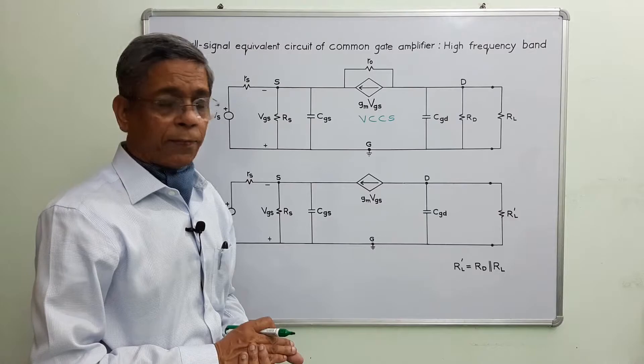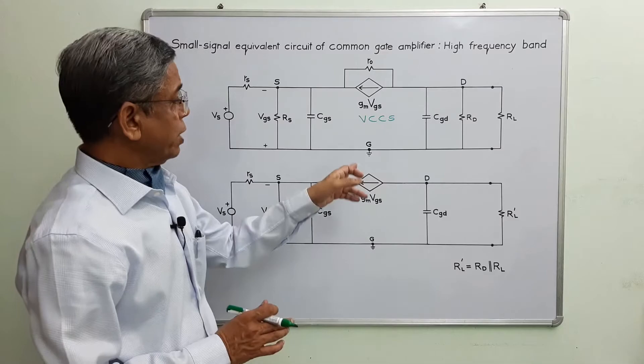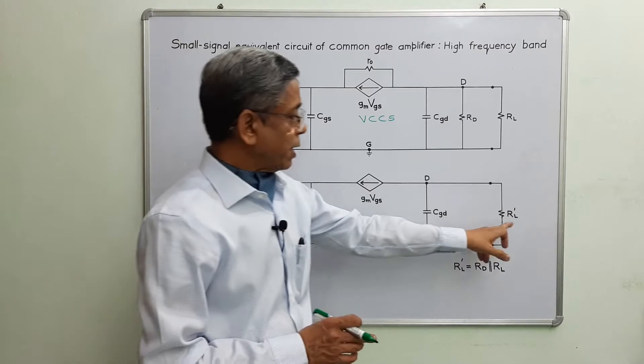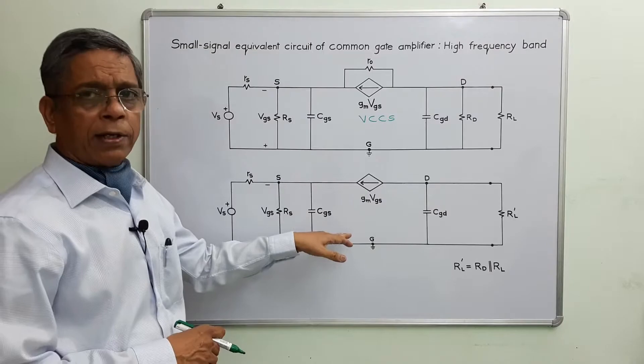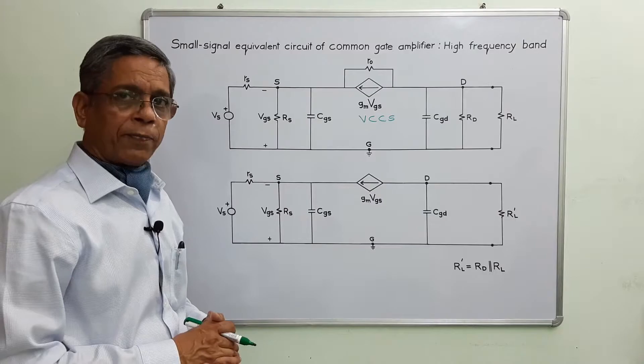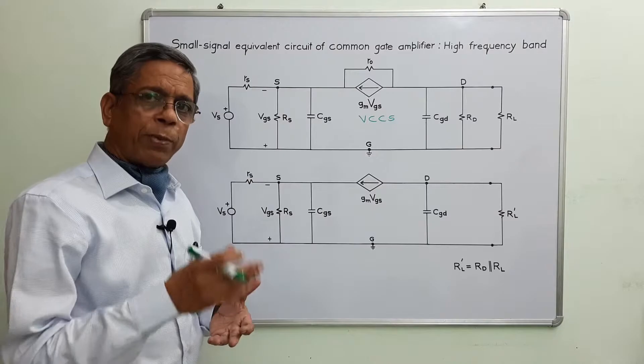Because CGS and CGD don't behave as open circuits at high frequency band, the gain starts falling beyond the upper 3dB frequency. In most cases R0 is very high in value, so for simplification we can neglect that part. RL' is the parallel combination of Rd and RL. This is the simplified small signal equivalent circuit for common gate amplifier working at high frequency band.